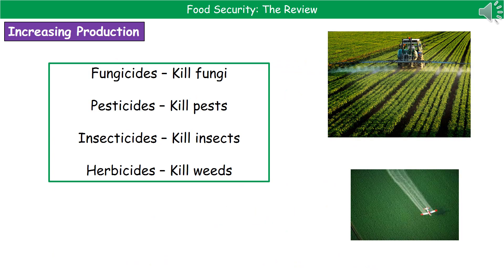We need to know what each of those chemicals actually does. It's quite logical — when you see the suffix '-cide', that means it's killing something, and the prefix tells you what it's killing. So fungicides kill fungi, pesticides kill pests, insecticides kill insects. The one to be careful of is herbicides — that's not killing herbs, it's killing weeds. Make sure you know those four different chemicals used to take care of competition and pests.